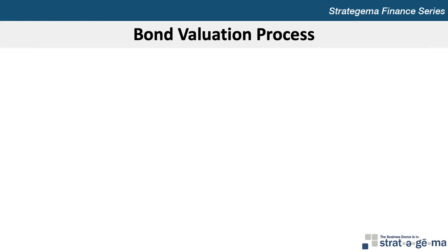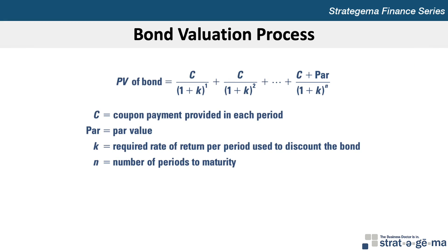Let's begin with discussing the bond valuation process. The appropriate price of a bond reflects the present value of the cash flows to be generated by the bond in the form of periodic interest or coupon payments and the principal payments to be provided at maturity, all discounted at the required rate of return or yield to maturity. The coupon payment is based on the coupon rate multiplied by the par value of the bond.